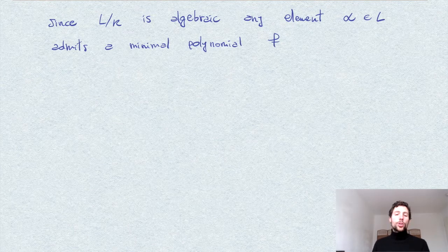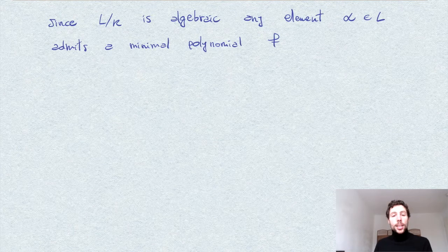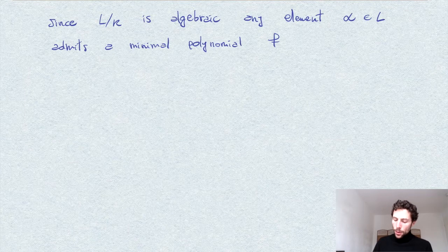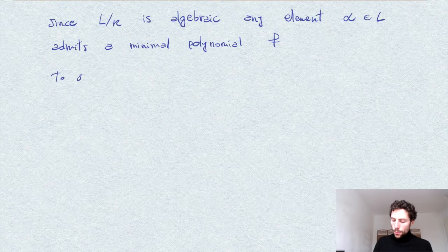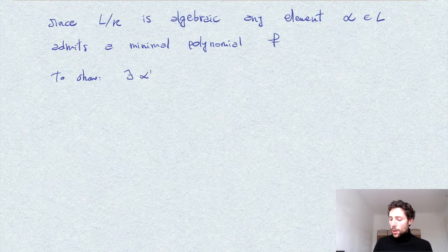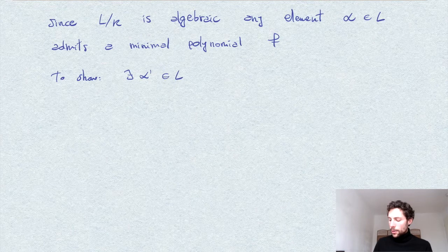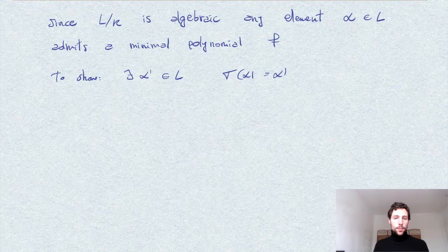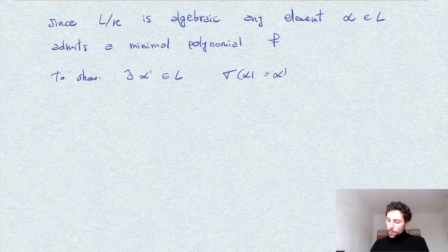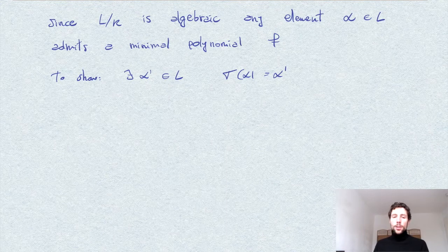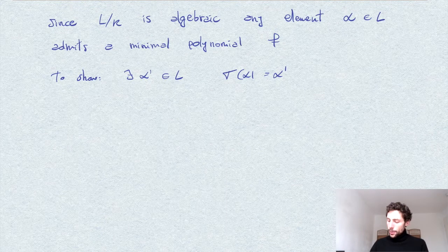So what we want to show is that alpha is the image under sigma of some element alpha prime. So we need to show that there exists alpha prime in L such that sigma of alpha prime is equal to alpha. So the question is where to find this alpha prime.